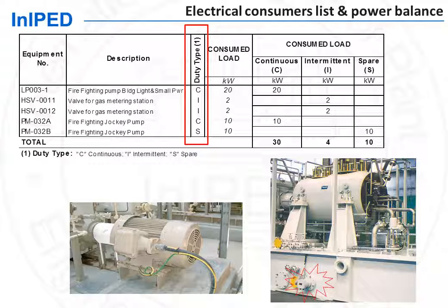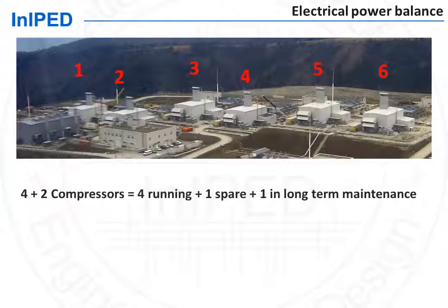Electrical discipline coordinates closely with process to identify which are the most demanding process operating scenarios in terms of electrical power consumption. Let's consider, for instance, the case of this compressor station. It has six compressors in a 4 plus 2 configuration.